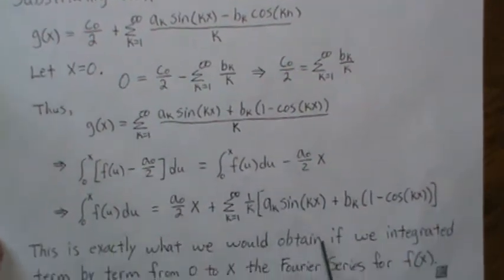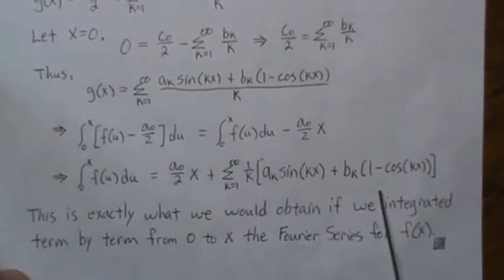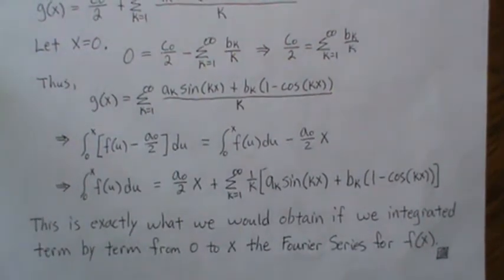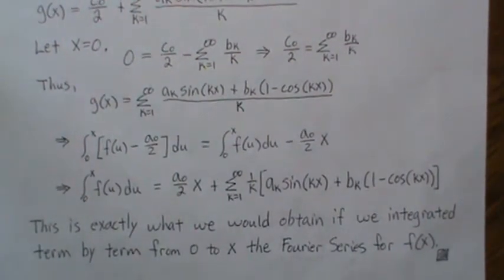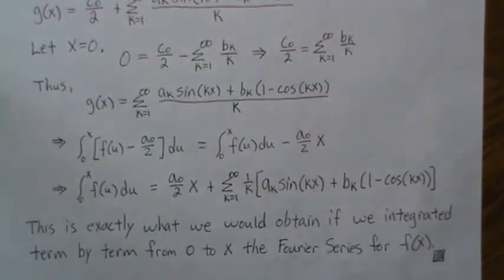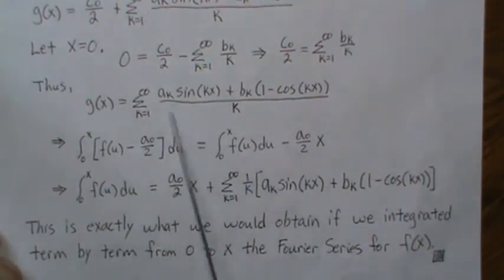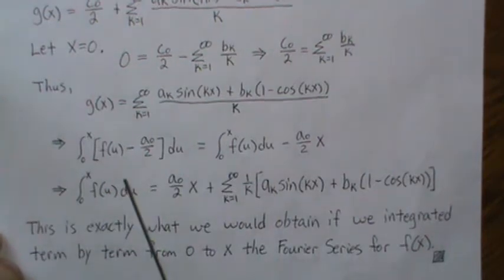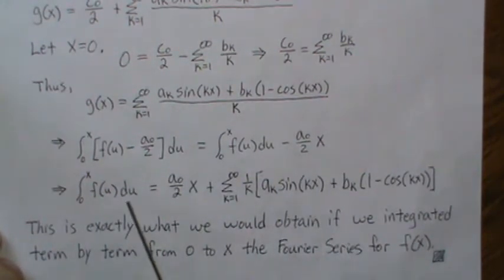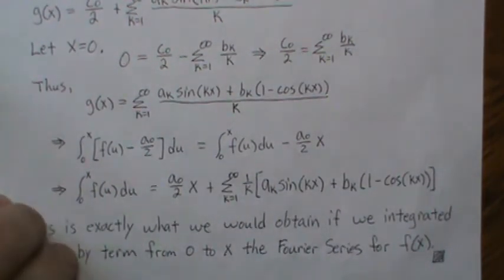But the fascinating thing about this is, this is what we'd get if we integrated the original Fourier series for f term by term. And so we're finished. So this, we know that this is g(x), and these are equal. And so this has to equal this, but that's a term by term integration.